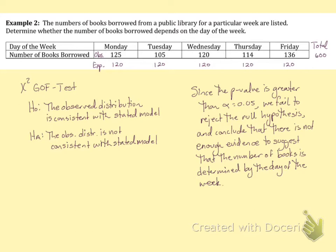We have the observed values, our expected values are equal in this case, our hypotheses are the same, and we're going to come up with the exact same chi-squared test statistic and the p-value. So it's just finding those values. Put the observed values in L1, and L2 is going to be the expected values.